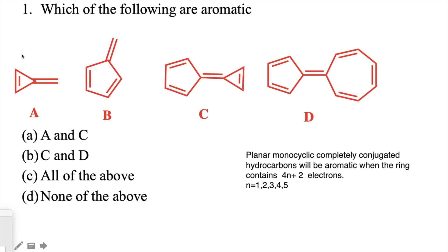If you look at these, they are all planar molecules which have extended conjugation, so the initial conditions of Huckel's rule are met. But according to Huckel's rule, the number of pi electrons should be 4n+2, with n equal to 0, 1, 2, 3, 4, 5. Some of these have 4n+2 — for instance, 2 electrons in the ring — while in another case there are 4, which does not follow Huckel's rule.